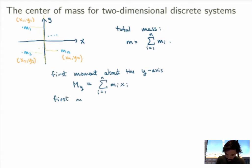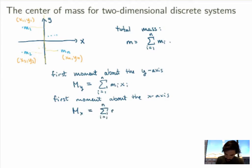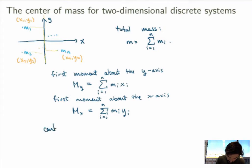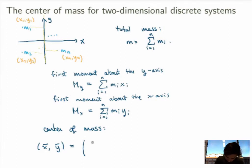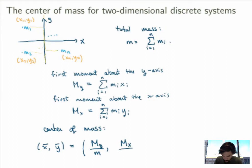Then you do the exact same thing with respect to the x-axis. The first moment about the x-axis, MX, is the sum from i equals 1 to n of the masses times their distance to the x-axis, which is given by the y-coordinates. With this generalization we can find the center of mass: the x-coordinate x-bar is MY over the total mass M, and the y-coordinate y-bar is MX over M.